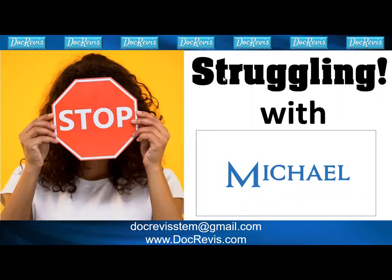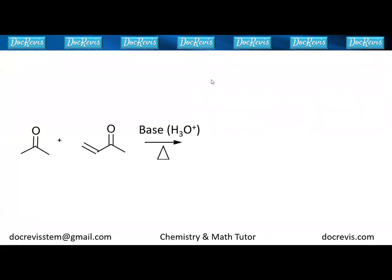Let's do a Michael reaction. For a Michael reaction, all you have to do is take a look at the alpha ketone, connect the alpha ketone to the alpha beta unsaturated, and redraw.